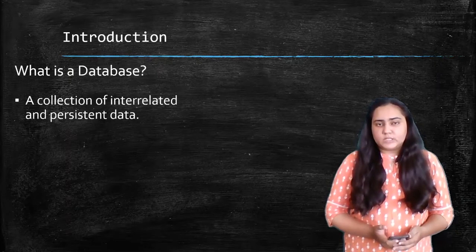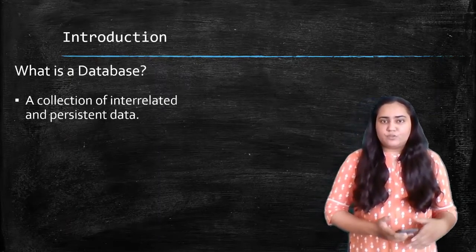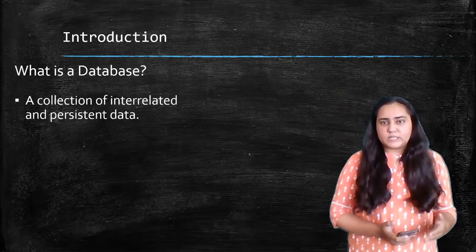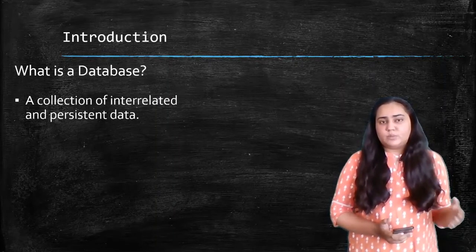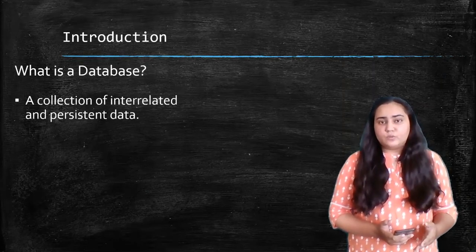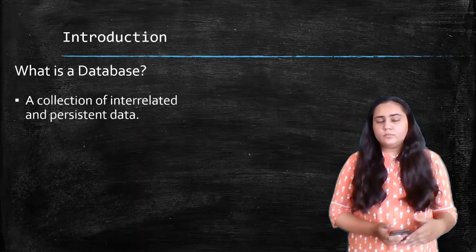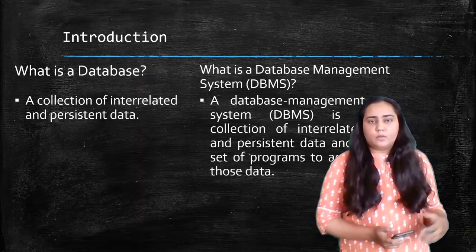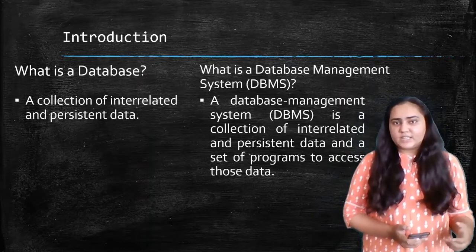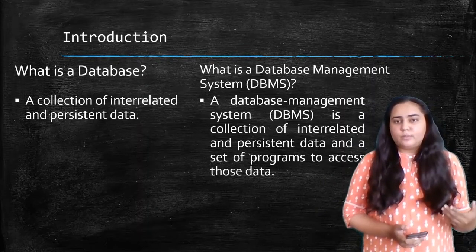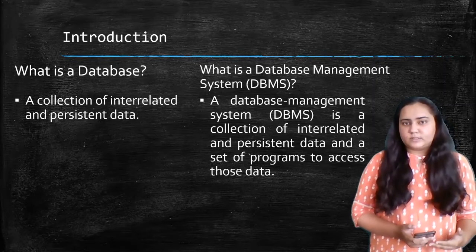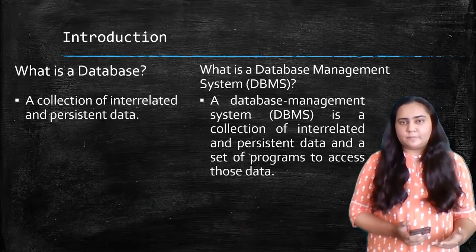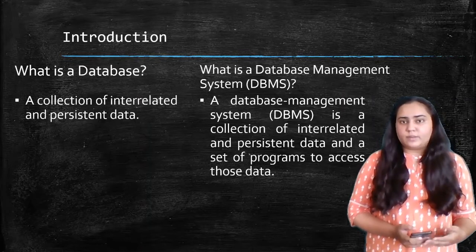The data should also be persistent, meaning data that remains in the system for a long time until you try to delete it. It has to be present in the system for as long as you want. A database management system is a database — a collection of interrelated and persistent data — but along with that, because it's a management system, it also has a set of programs that allow you to access and manipulate that data.